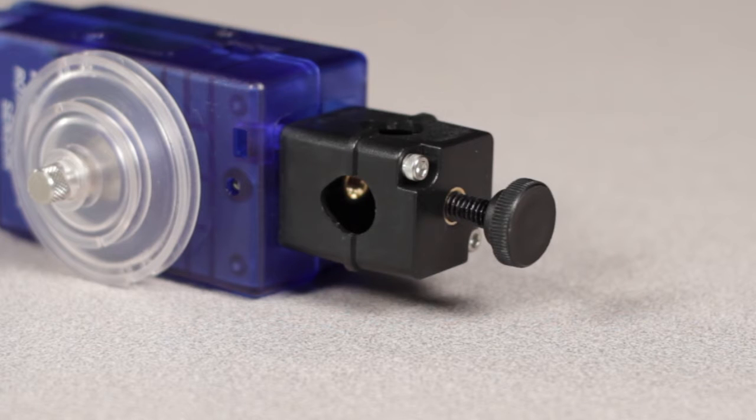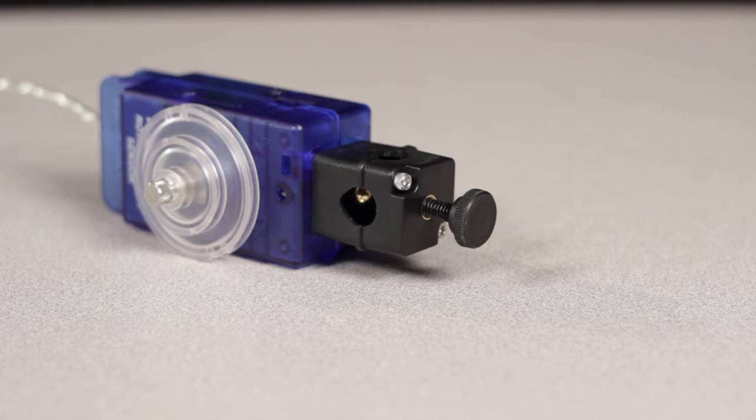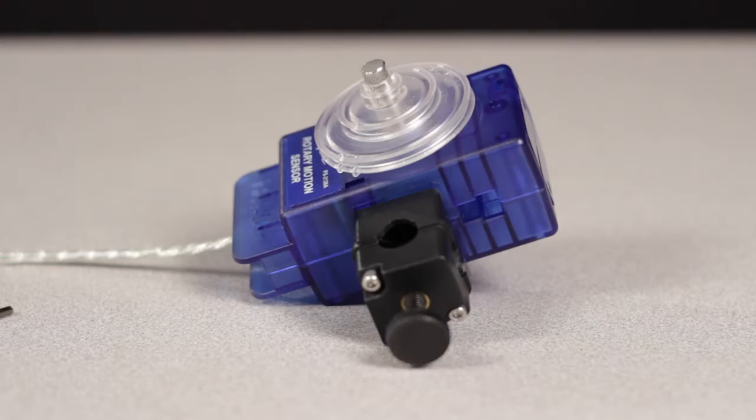Every rotary motion sensor comes with an adjustable rod clamp that fits rods up to 12.7 millimeters in diameter and can be attached to the sensor in three different locations: at the end opposite to the cable, and on either side of the case.